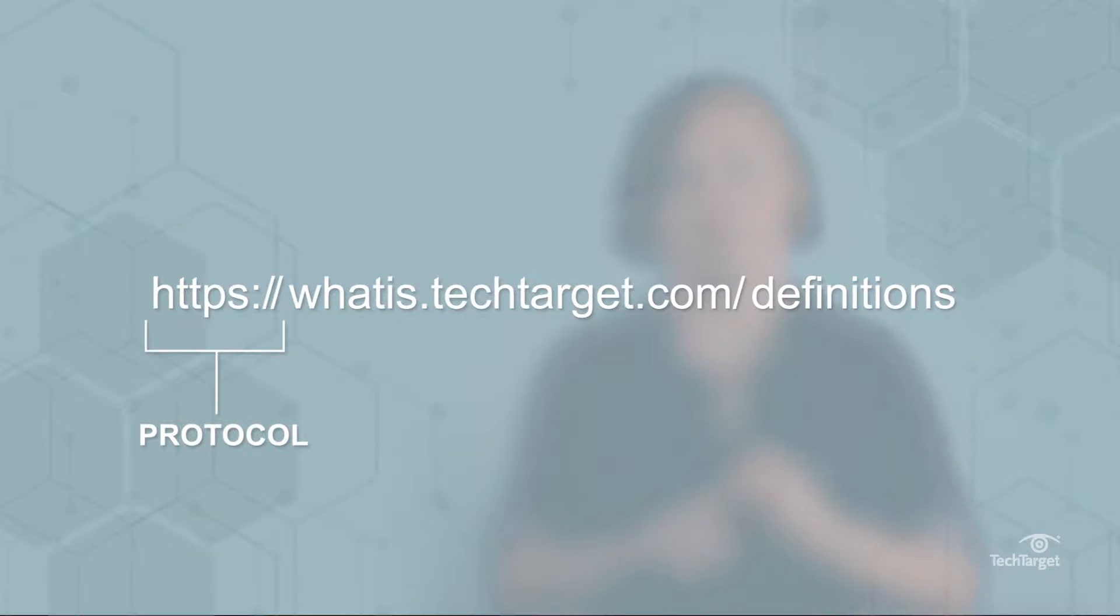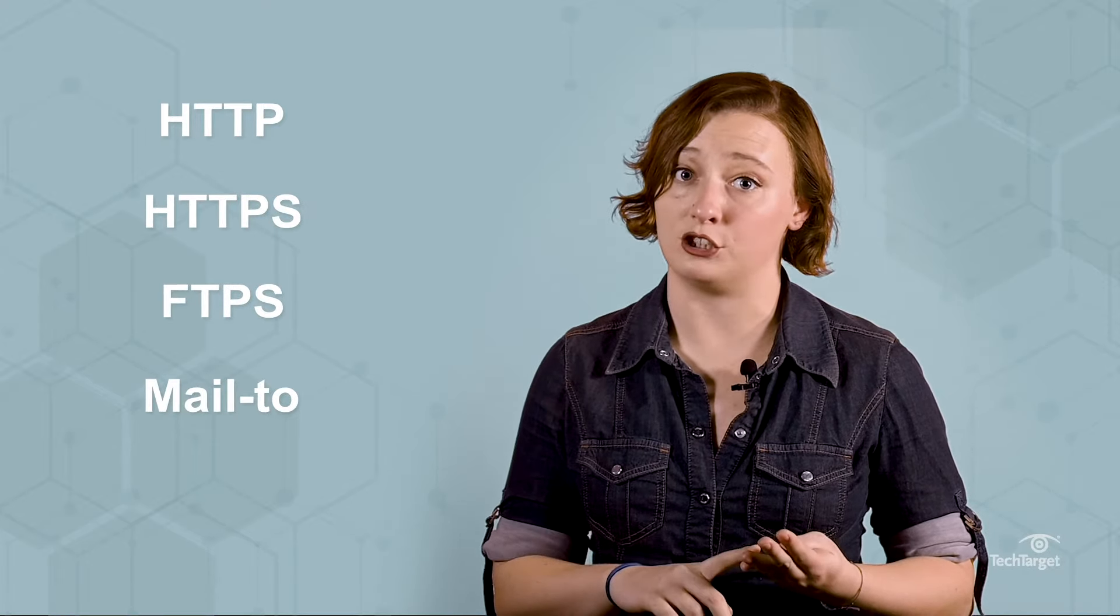A URL is made up of multiple parts, most notably the protocol, the host or domain name, and the path. The protocol, or scheme, is what accesses the resource on the internet. Examples include HTTP, HTTPS, FTPS, and Mail2.